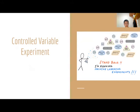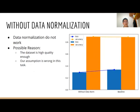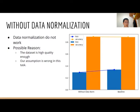We start doing some control variable experiments in order to improve our proposed model performance. Our first experiment is about data normalization. We find out our assumption about the data normalization, specifically the grayscale normalization, did not show a large effect. There are two possible reasons: first, the dataset is of high enough quality; and second, our assumption is wrong for this task.